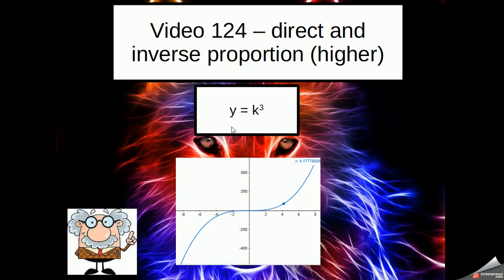If we had a cube-shaped graph, so y equals k cubed or y equals x cubed, it would give us a shape like this. Notice how it's going through the zero point.